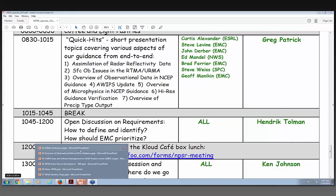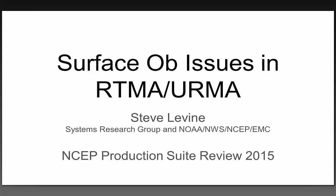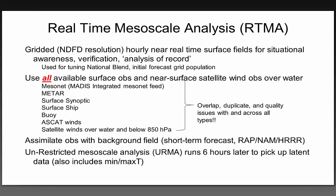Our next speaker: surface observation issues, RTMA, URMA — Steve Levine. I'm one of the RTMA developers and also do some observation processing work. The RTMA is a gridded surface analysis which starts out with a high-resolution model forecast in the CONUS — a blend of the NAM nest and the HRRR — and we then assimilate basically all surface observations we can find. Each observation type has its own set of issues; I'll focus mostly on mesonet data.